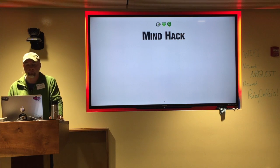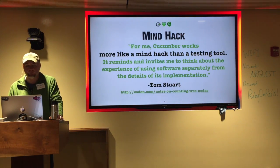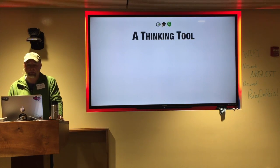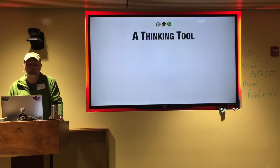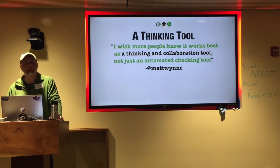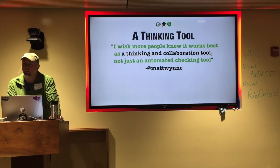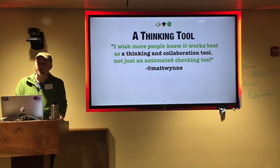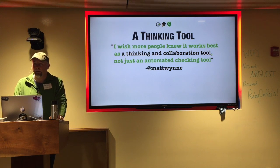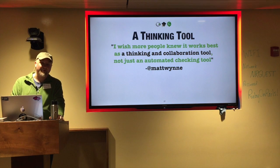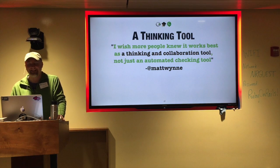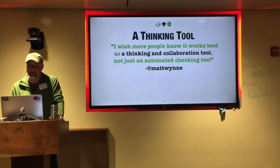Tom Stewart of the London Ruby User Group wrote something about Cucumber that really resonated with me. He described it as being more like a mind hack than a testing tool, because it helps you think about the big picture rather than the details. As I was putting this talk together, I asked Matt Wynn — co-author of the Cucumber book — if there was anything he wanted people to know about Cucumber. He tweeted back that he wished more people knew about Cucumber as a thinking and collaboration tool and not just something for test automation. Both of these quotes lead back to something I said a few slides ago: I asserted that Gherkin is not code and that Cucumber is not for TDD. But negative definitions aren't always the most useful — a positive definition is much more useful than a negative one. So what are these things for?